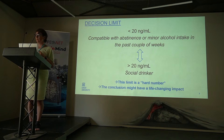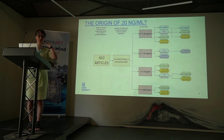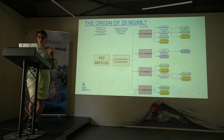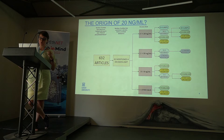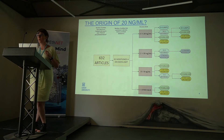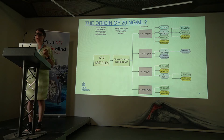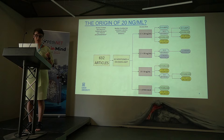Thinking about the 29 nanogram per milliliter, I was wondering where does it come from? And I asked a student to dig into the literature. What she did was she searched in PubMed all articles referring to PET or phosphatidyl ethanol. She found 632 articles, and then she selected those she had access to via our library account at University of Ghent, and she withheld 82 articles which also referred to a cut-off or a decision limit.